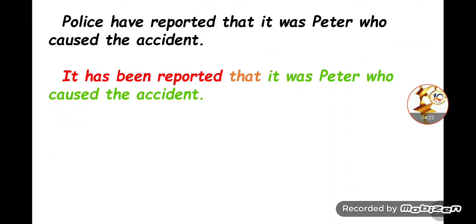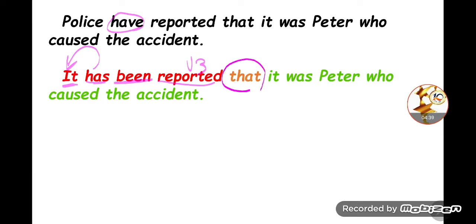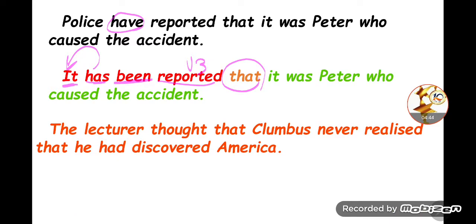Let's check if the answer is correct. We used 'it', then 'has' because with present perfect simple we use 'has' or 'have', then 'been', then verb three of the reporting verb, then 'that', and the rest: 'it was Peter who caused the accident.'